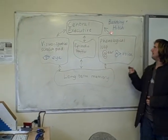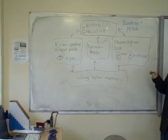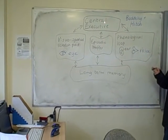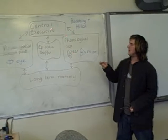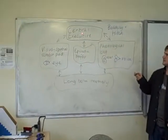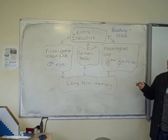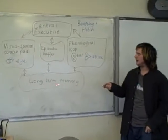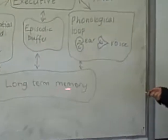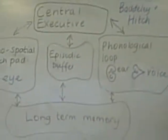Hi, today we're going to be looking at the Bradley and Hitches working memory model which, as you can see, is split into five sections: your central executive, your visuospatial scratchpad, episodic buffer, phonological loop, and then it all gets encoded into your long-term memory.